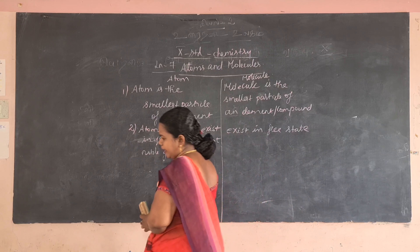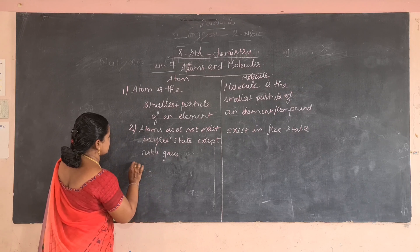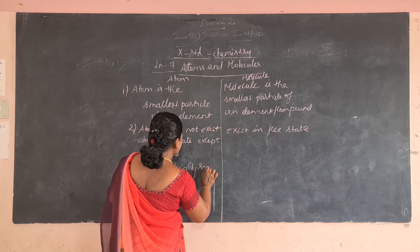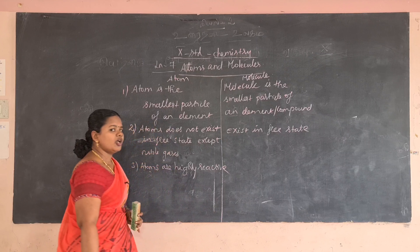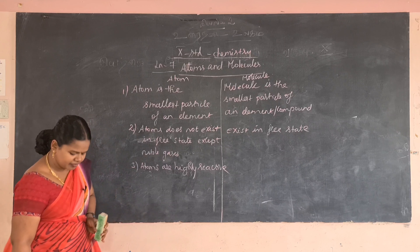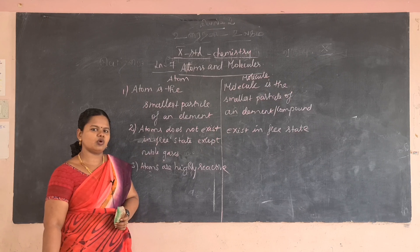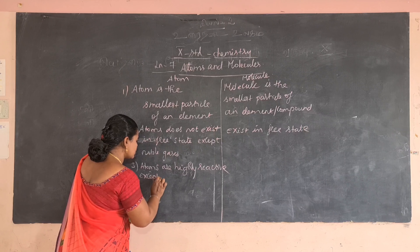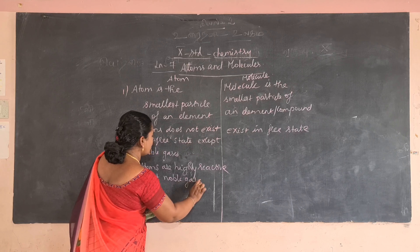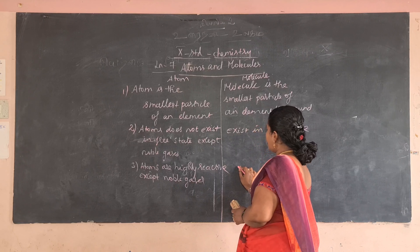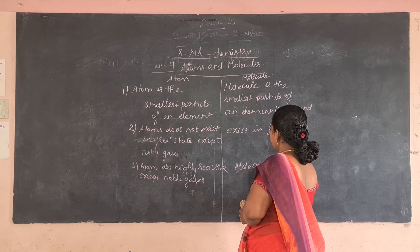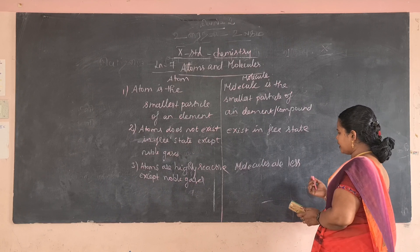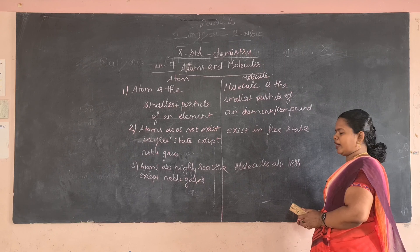Atoms are highly reactive except noble gases. Noble gases are not reactive because of their stable, completely filled electron configuration, which leads to their stability. Molecules are less reactive — they are not as reactive as atoms, because molecules are present along with two or more atoms combined together.